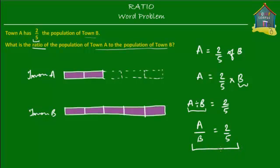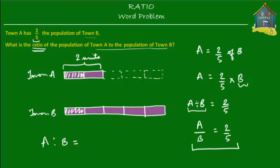We're going to find the population of Town A to the population of Town B as a ratio. From this model diagram, the population of Town A equals two units — this is one unit, and this is the second unit. The population of Town B equals five units of the same size. So the ratio of the population of Town A to Town B is simply two units to five units, which is 2 to 5.